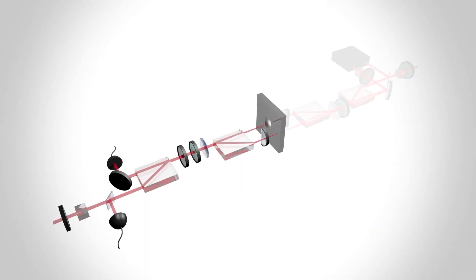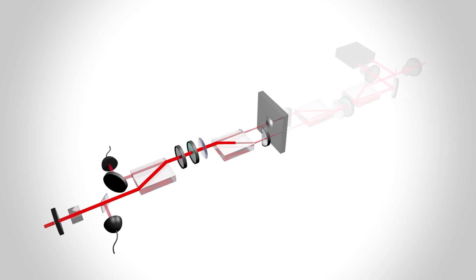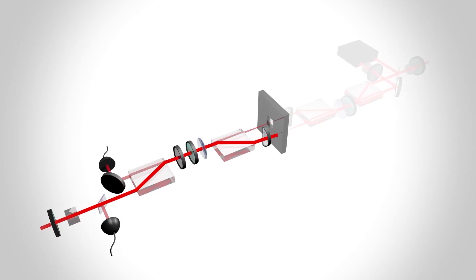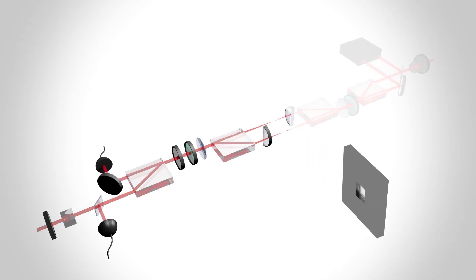In our experiment, a very weak laser beam is sent into an interferometer, where one arm reflects off a mirror, while the other arm reflects off a vibrating drum. In our case, the drum is a millimeter-scale silicon nitride membrane, which is visible to the naked eye.